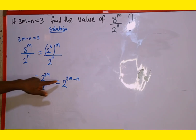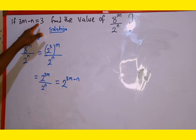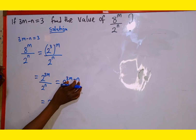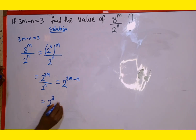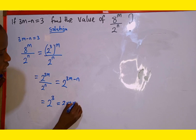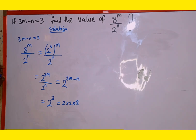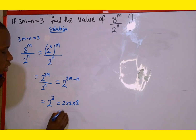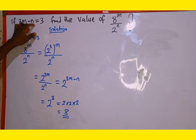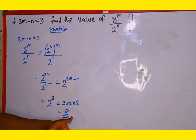We recall from the question that 3m minus n is equal to 3, so we replace 3m minus n with 3. This gives us 2 to the power of 3, which is 2 multiplied by 2 multiplied by 2. That equals 4 multiplied by 2, which gives us 8. Therefore, the value of 8 to the power of m divided by 2 to the power of n, given that 3m minus n equals 3, is equal to 8.